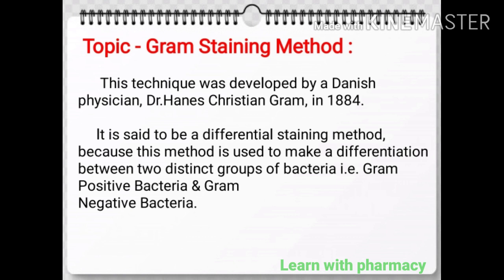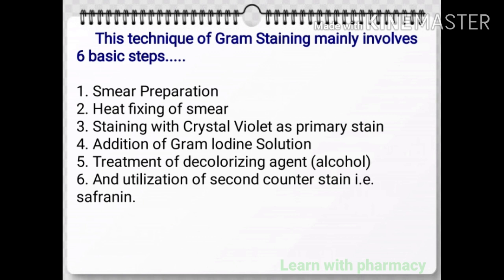It is said to be a differential staining method because this method is used to make a differentiation between two distinct groups of bacteria, that is gram-positive bacteria and gram-negative bacteria. This technique of gram staining mainly involves six basic steps.